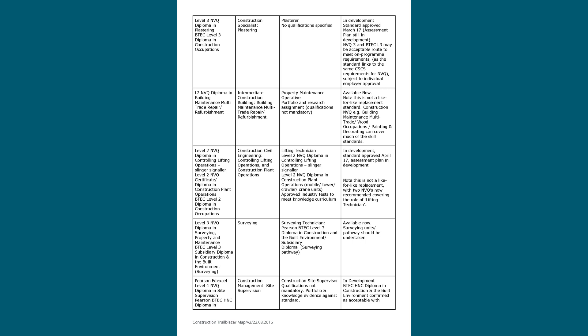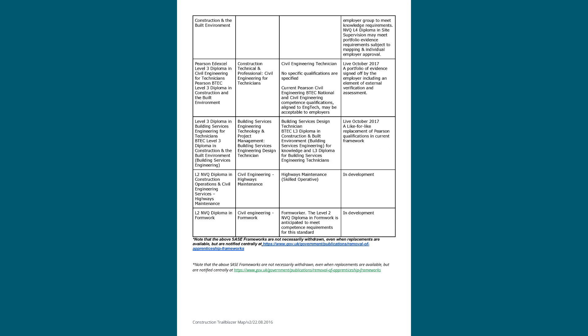For example, the Controlling Lifting Operations MBQ and Plant Operations MBQ are currently two separate frameworks. The new trailblazer apprenticeship in development for a Lifting Technician actually requires achievement of both the MBQ in Plant Operations and the MBQ in Controlling Lifting Operations. This shows the scope and potential of offering qualifications if you are approved — that's two MBQ qualifications the apprentice will need to achieve before endpoint assessment.